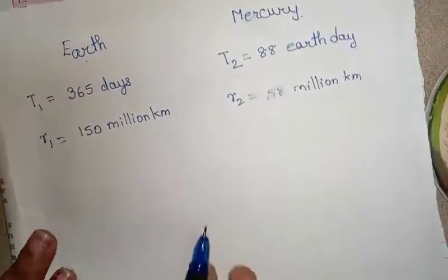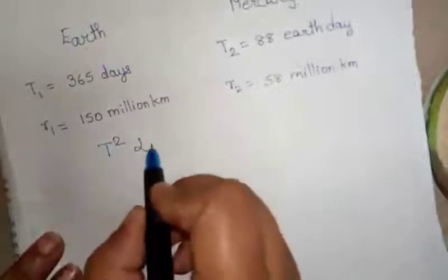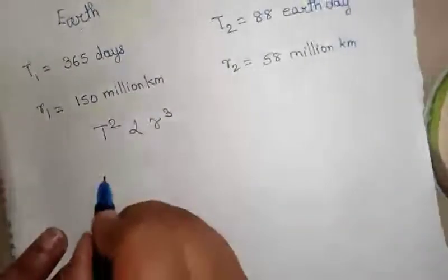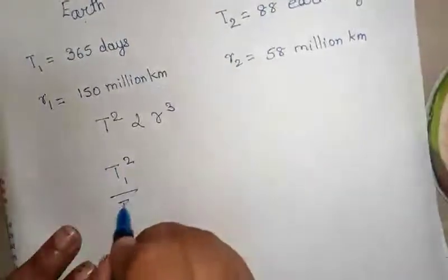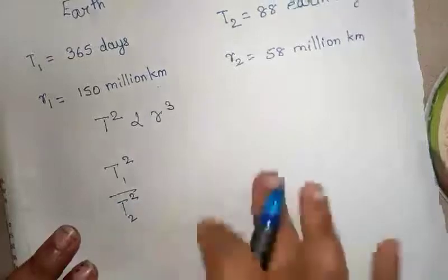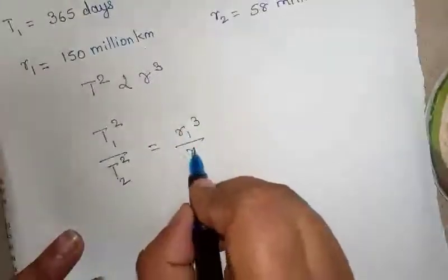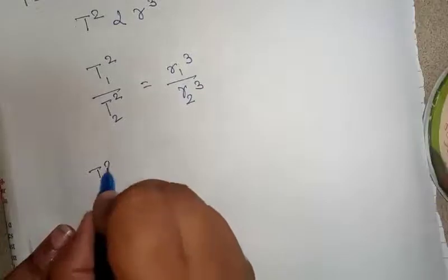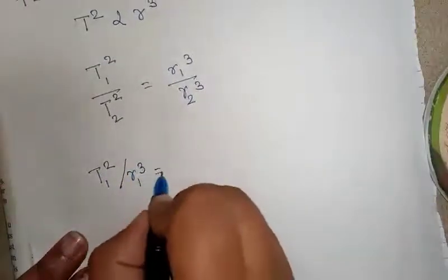So Kepler said that T² is directly proportional to r³. Here we'll take T₁² upon T₂² is equivalent to r₁³ upon r₂³. T₁² upon r₁³ is equivalent to r₁³...